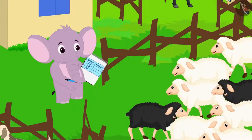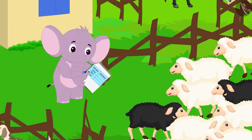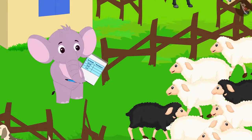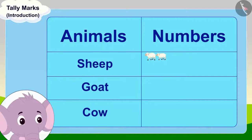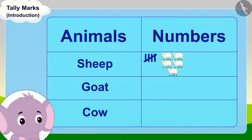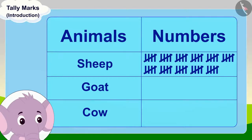Appu started counting his sheep once again according to what Bunny had said. He counted five sheep and drew tally marks in this way. Then, for the next five sheep, he once again drew the tally marks. In this way, Appu finished counting all his sheep.